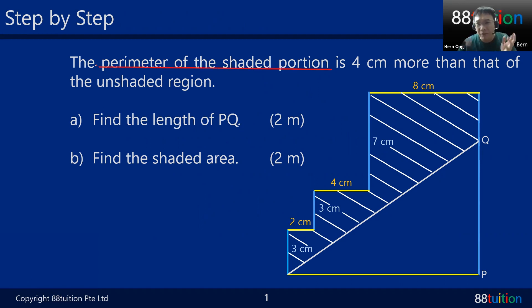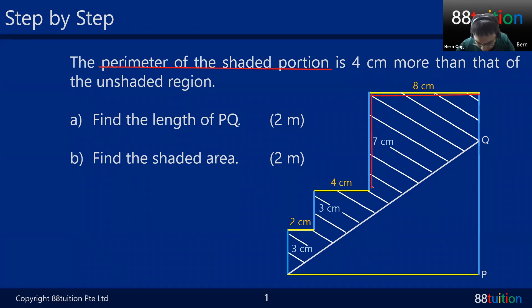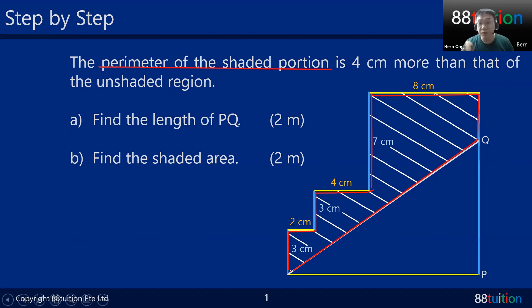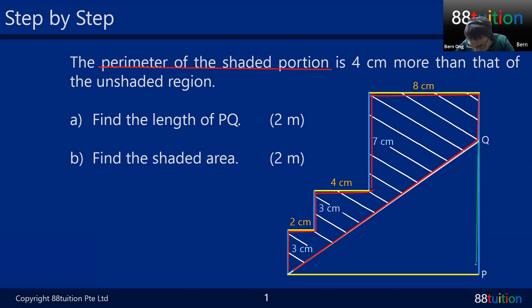The shaded portion is this area here, so the perimeter follows the red color line. This red line is the perimeter of the shaded region. This perimeter is 4 cm more than the perimeter of the unshaded region. The unshaded region's perimeter is made of the green lines and the line here — that's the key clue.